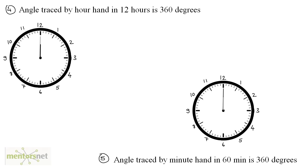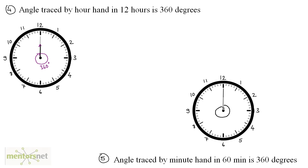The fourth point: the angle traced by the hour hand in 12 hours is 360 degrees. Each hour the hour hand points to a particular label, and after 12 hours it has completed one full revolution, which is 360 degrees. Similarly, the fifth point: the angle traced by the minute hand in 60 minutes is 360 degrees, since the minute hand also travels one full revolution in 60 minutes.